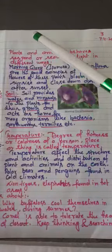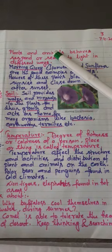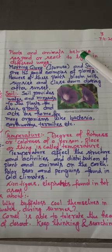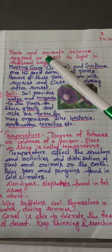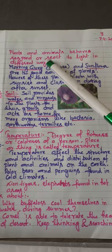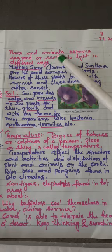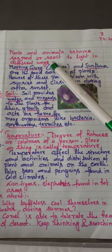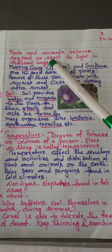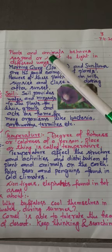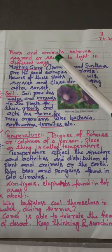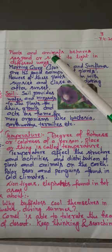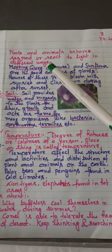Now, plants and animals present on the earth behave, respond, or react to light in a very different way. For example, have you seen cockroaches, bats, owls, etc.? They are active during the night. It means that these types of animals hate light; they love darkness only, and that's why they remain active during the night. But other animals are active during the day.